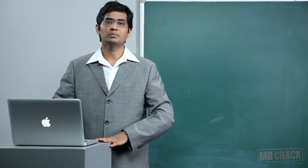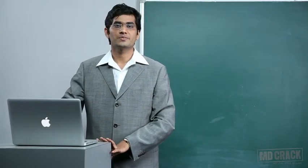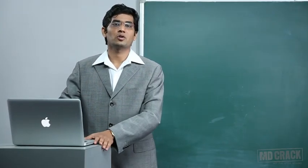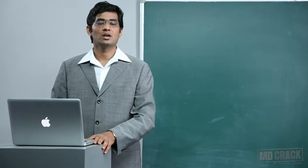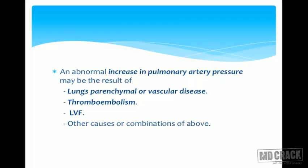Hello students, welcome to a session on respiratory disease. Today's topic is pulmonary hypertension, defined as an abnormal increase in pulmonary artery pressure. It may be a result of lung parenchymal or vascular disease, thromboembolism, or heart disease like left ventricular failure.